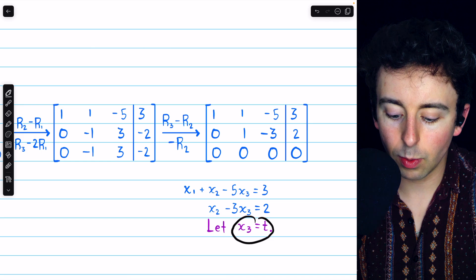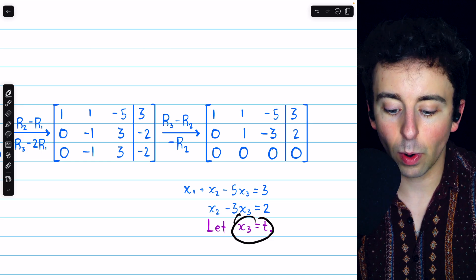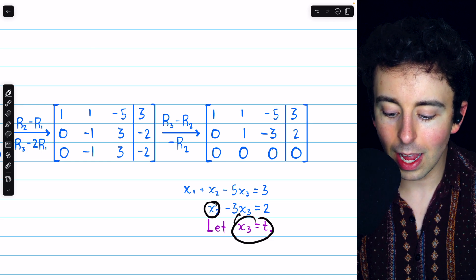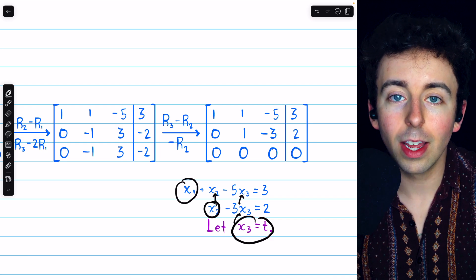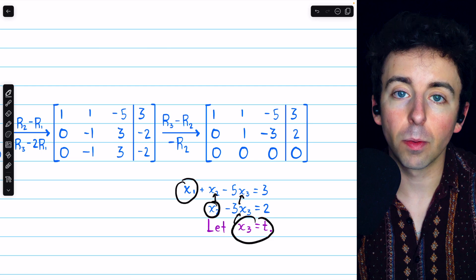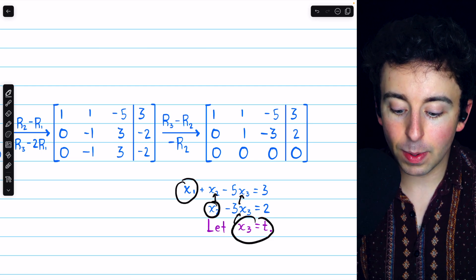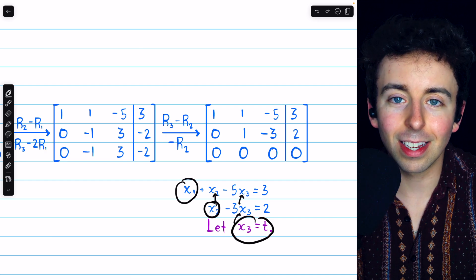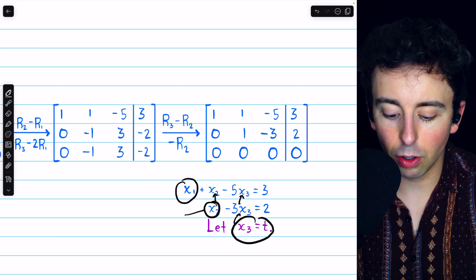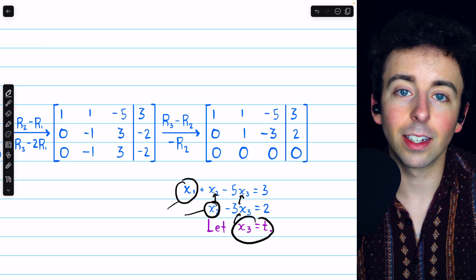x3 equals t, and we can plug that into the second equation and solve for x2, and then plug both of those things into the first equation to solve for x1. But it will all be in terms of t. Again, that's because x3 is free to be whatever it likes, that value t. And then the values of x2 and x1 would be calculated accordingly.